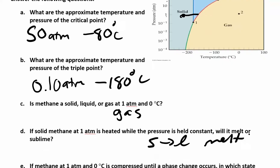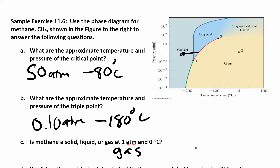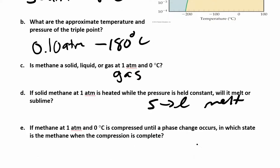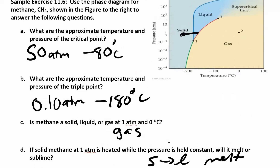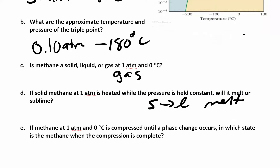Last one: if methane at 1 ATM and 0 degrees Celsius is compressed — meaning pressure is increasing until a phase change occurs — what state will methane be in when the phase change is complete? Starting at zero degrees Celsius and 1 ATM and going straight up by increasing pressure, you're going to end up getting a supercritical fluid.